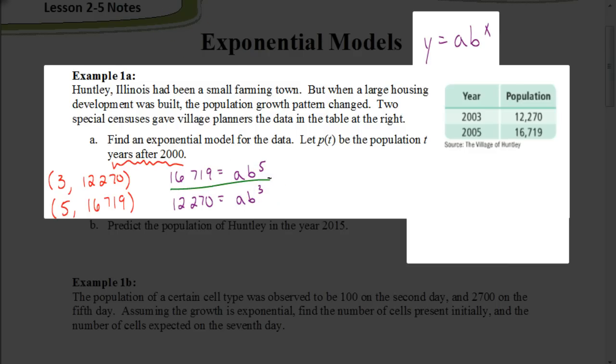And the next step is we're going to divide these two equations. Now when I divide 16,719 by 12,270, I get 1.36. I'll say 1.36259, to be more exact, is my value for when I divide these. And when I divide these, remember the a's cancel each other out, so we're left with the b's. And b to the fifth divided by b cubed, we subtract the exponents, giving me b squared.